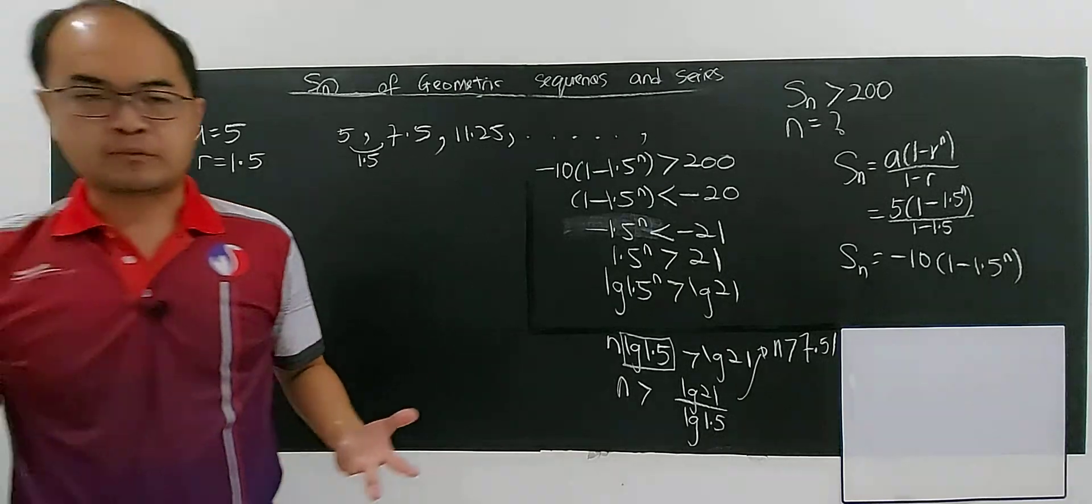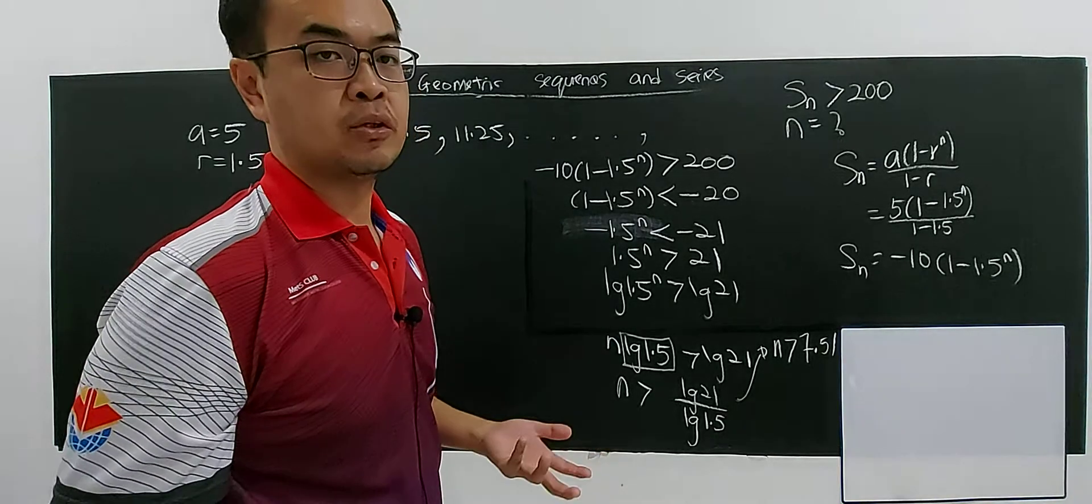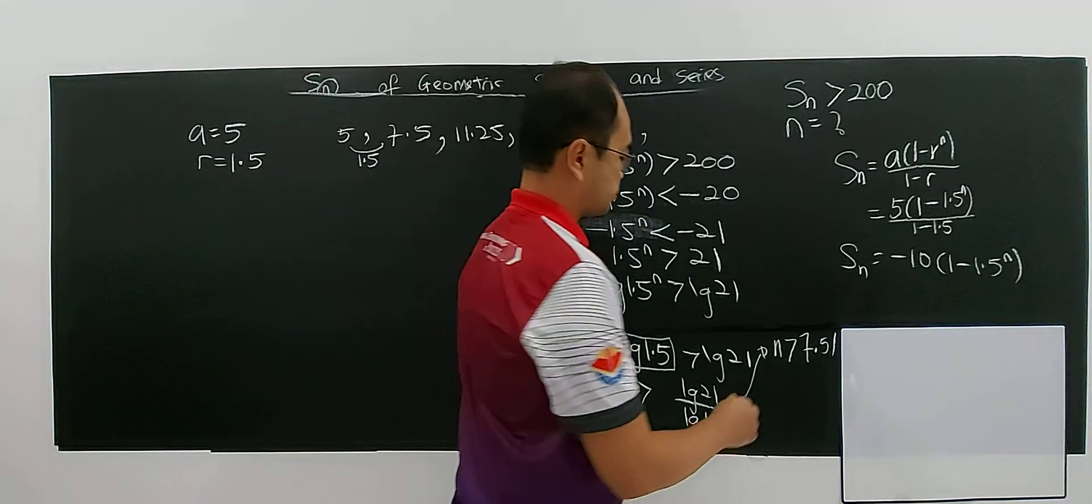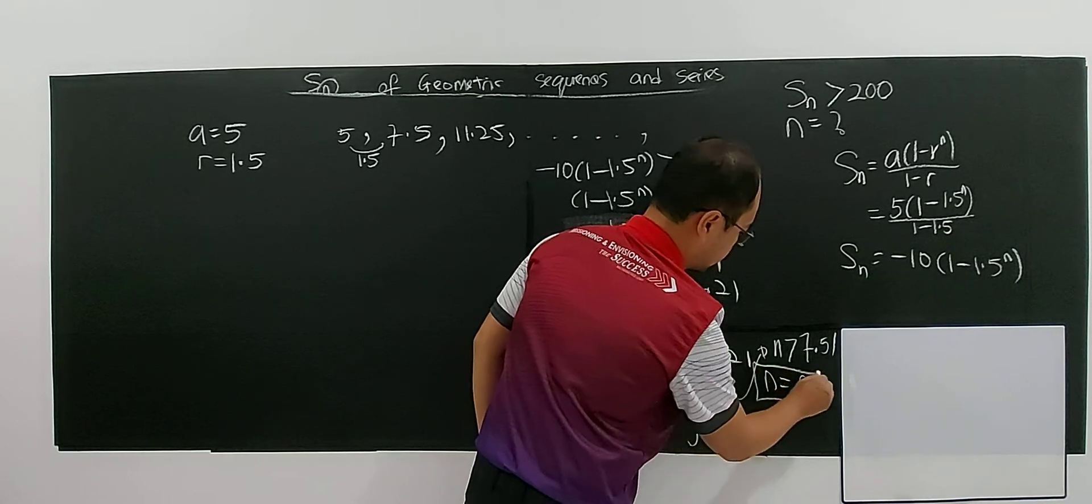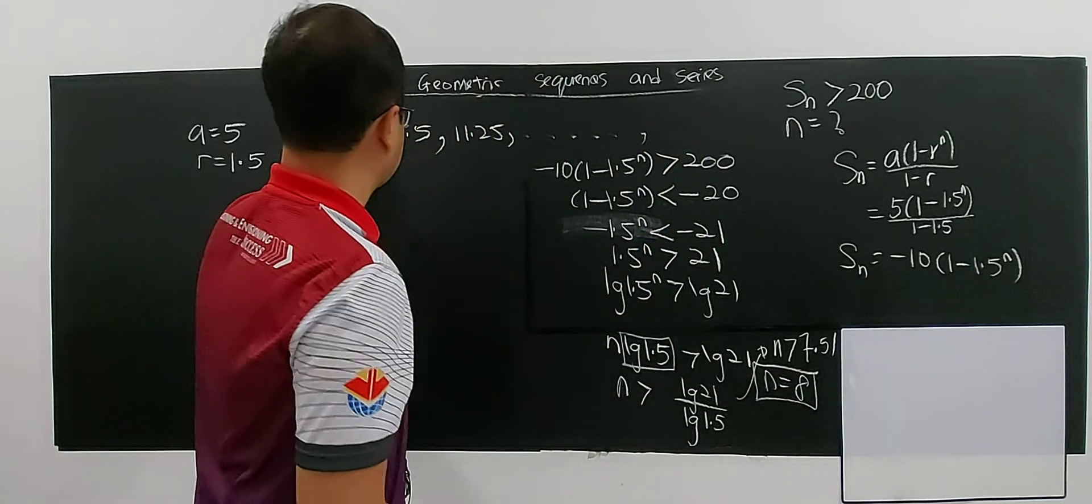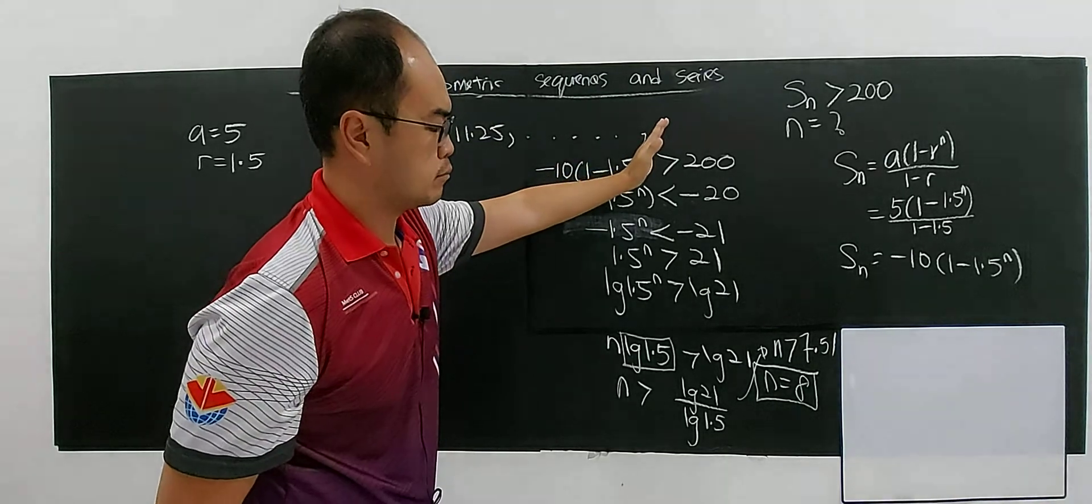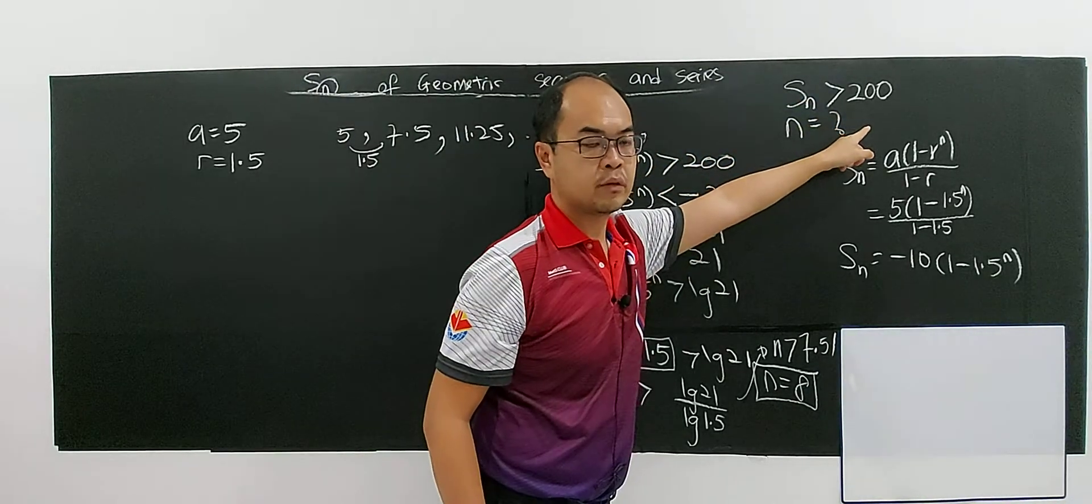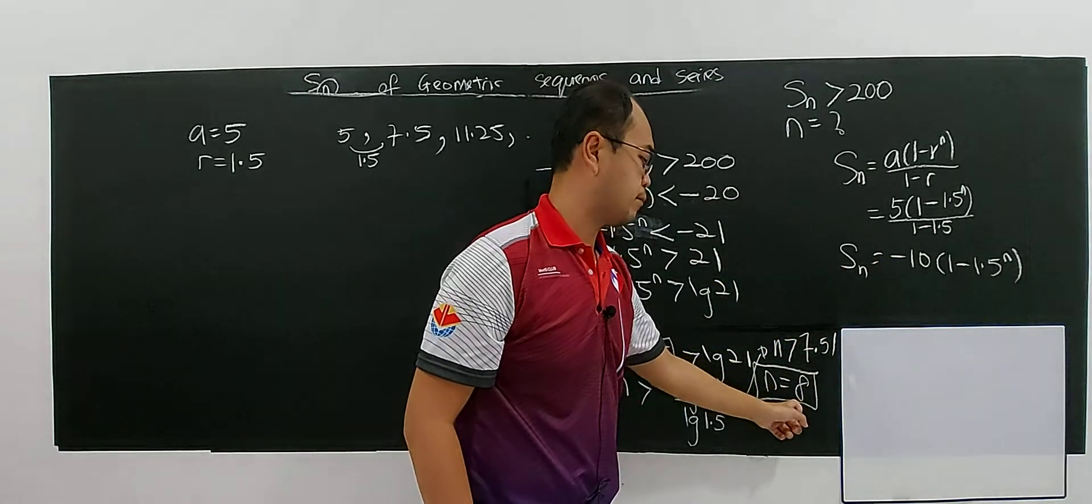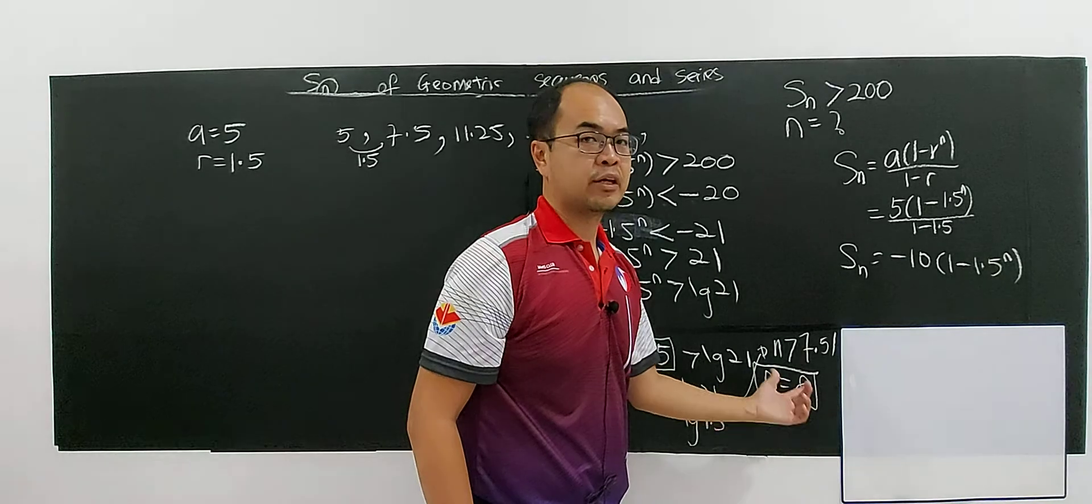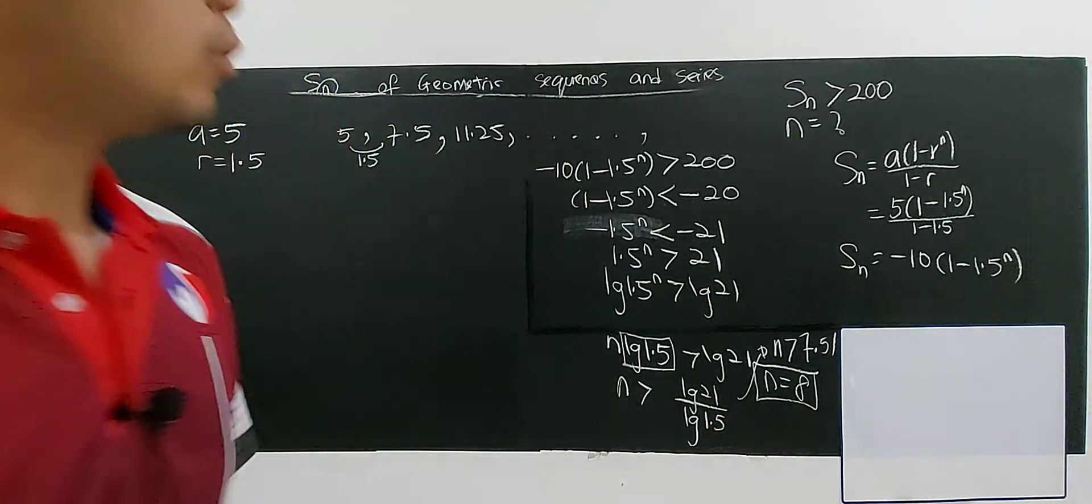Needed, diperlukan is like minimum. So which is n equals to 8. You need 8 terms, sum up all the 8 terms in order to be greater than 200. 8, 9, 10 and so far, but you choose 8 because we just need 8 already enough to greater than 200. That's all for this question. Hope you understand.